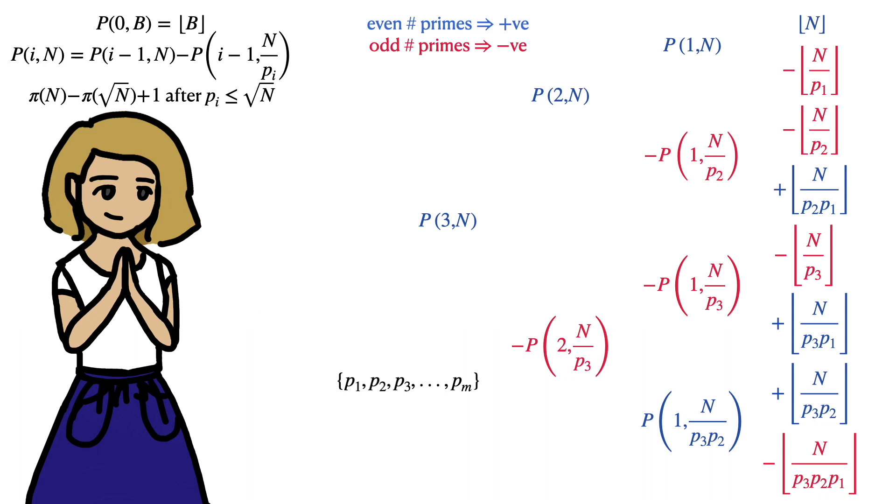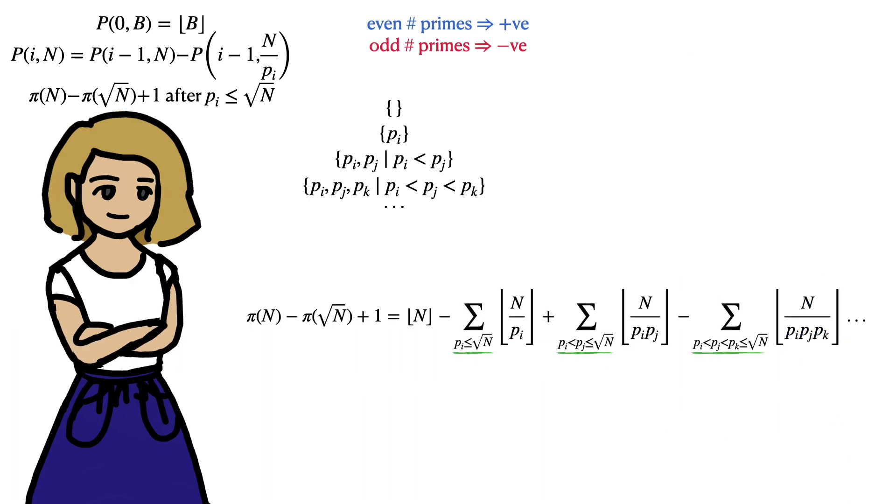Another way to look at all the possible subsets is to look first at the null set, then all the singles, doubles, triples, etc. This is how Legendre's formula expresses all the subsets of the set of primes up to root n, and the signs alternate each term in accordance with our even-odd rule.